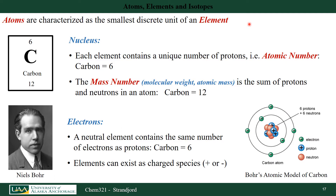Atoms are characterized as the smallest discrete unit of an element. For elemental carbon, that atom consists of a nucleus and electrons. The nucleus contains both neutrons and protons, as shown in the Bohr model of the carbon atom. There are six protons in carbon, and that's what determines that it is carbon — the number of protons, given as the atomic number. So on the periodic table, a six is associated with carbon, telling us there are six protons.